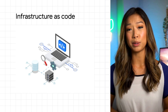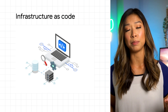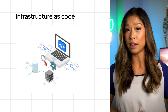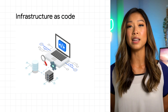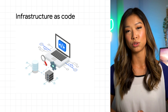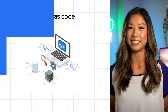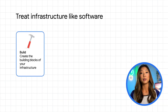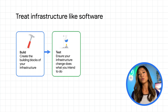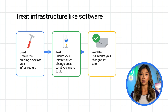IaC is a technique to treat your infrastructure provisioning and configuration in the same way you handle application code. You can automate provisioning of your cloud resources with code, create templates for reproducibility, and store config files in a source version control so it's discoverable and can be audited. Automating infrastructure with a CI/CD pipeline means any changes to your configuration can be automatically tested and deployed.